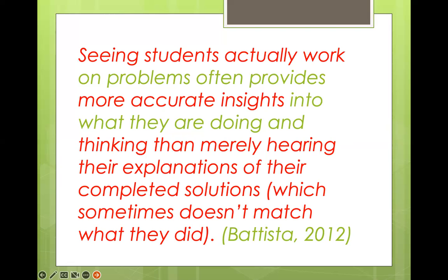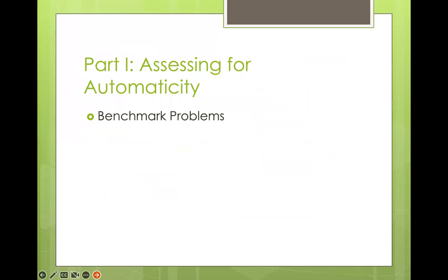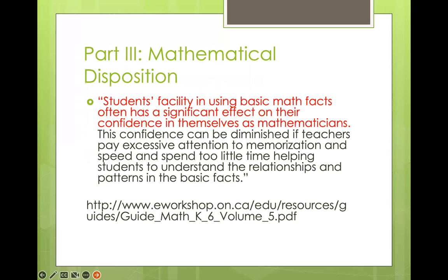For example, a child might say 'I just knew it' while actually counting on their fingers, or say 'I skip counted' when they knew it automatically. You really have to watch. There was a girl who said she was skip counting, but she was taking a really long time. When I finally got her to say it out loud, she was counting by ones — but calling it skip counting. You have to probe and sometimes it takes kids a long time to reveal what they're doing, but it's worth the investment because that's how you can really help them.